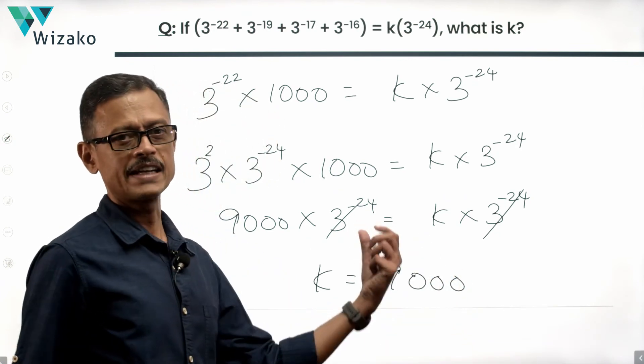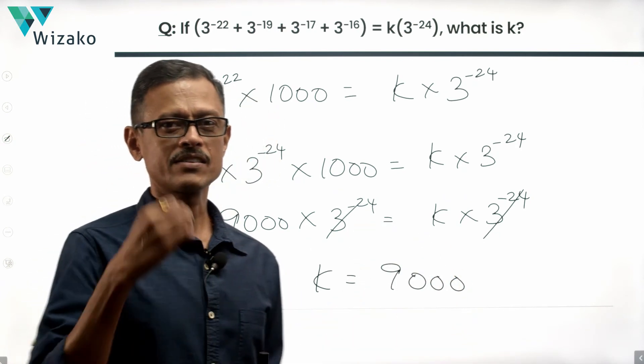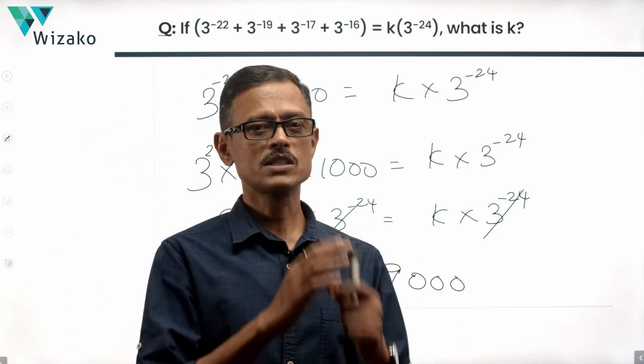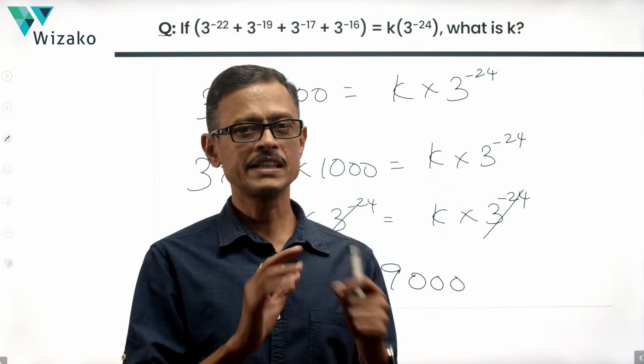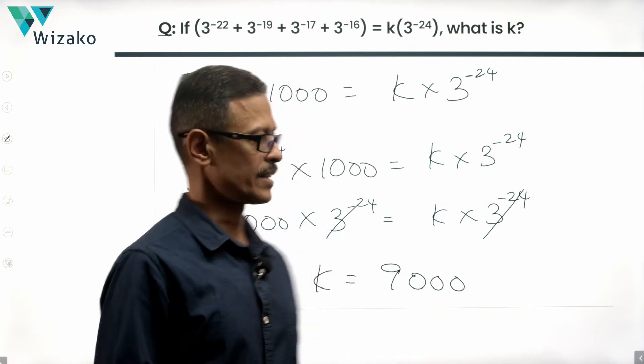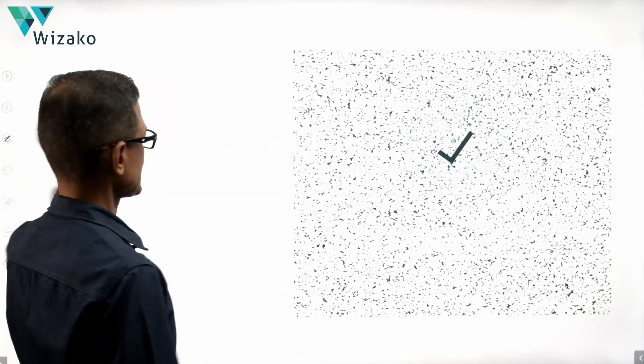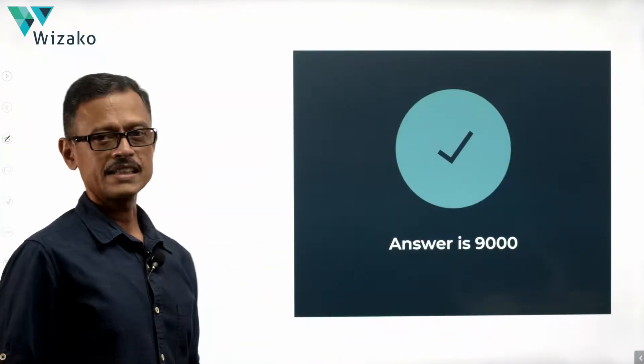It's a medium difficulty question. Essentially, applying rules of exponents is all that is tested. The correct answer is k equals 9000.